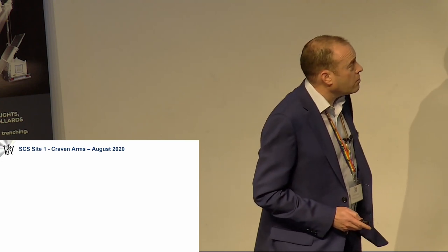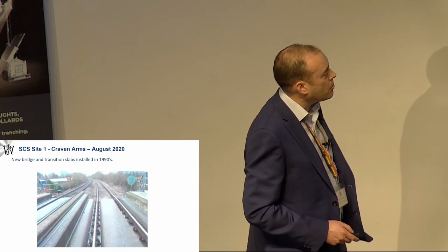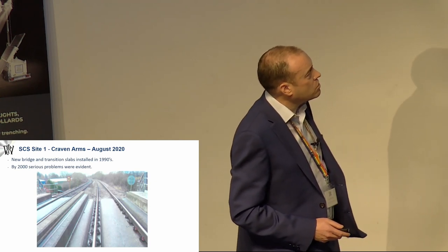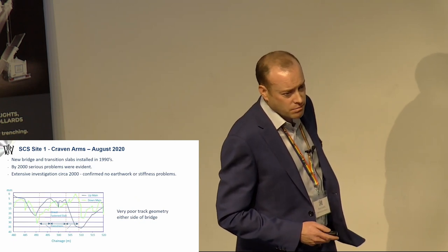Site one, Craven Arms, Cheney Longville on the Wales and Western route. In the early 1990s, the track form here, this bridge deck, was a new bridge deck, a new slab track, direct fixation was installed. By the early 2000s, there were some serious problems evident with regard to movement and settlement in this piece of track. Albeit underneath here there is a concrete stepped track transition, which was a methodology within geotechnical and track transitions many years ago to try and make some sort of method of support on and off structures. It was evident that this didn't completely help the situation.